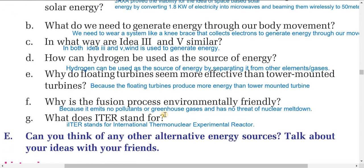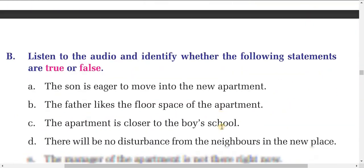Question f: Why is the fusion process environmentally friendly? The fusion process is environmentally friendly because it emits no pollutants or greenhouse gases and has no threat of nuclear meltdown. Question g: What does ITER stand for? ITER stands for International Thermonuclear Experimental Reactor. This concludes the comprehension questions, and I will come up with solutions to other answers next time.